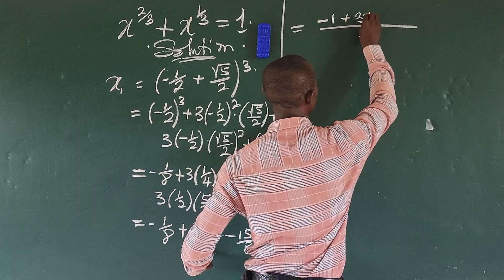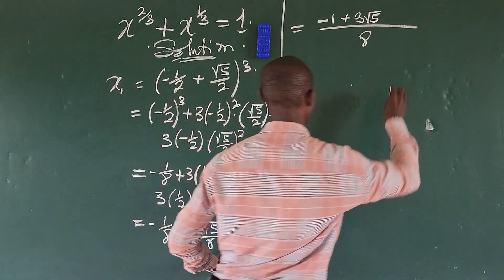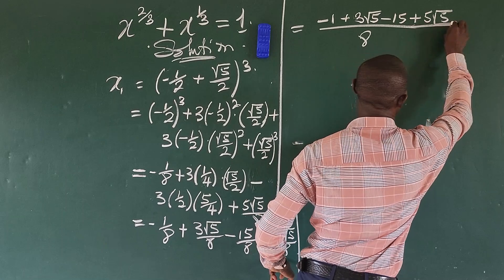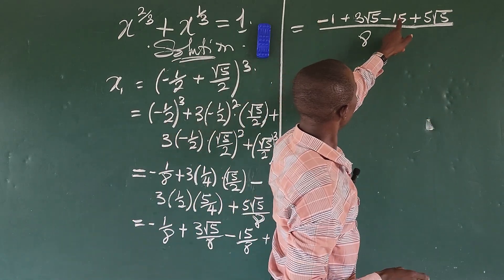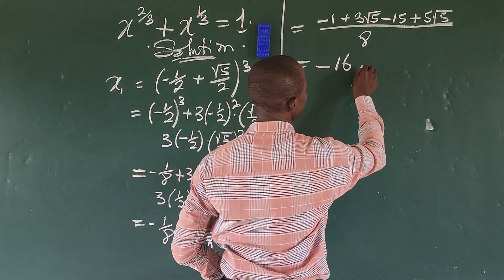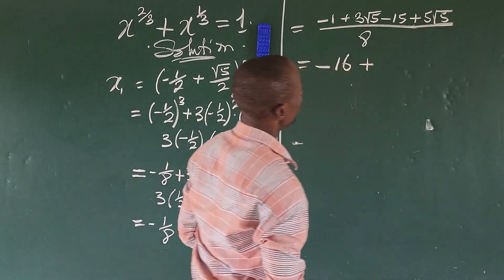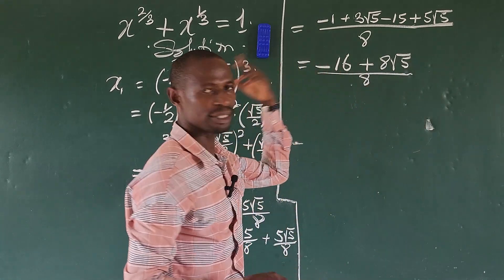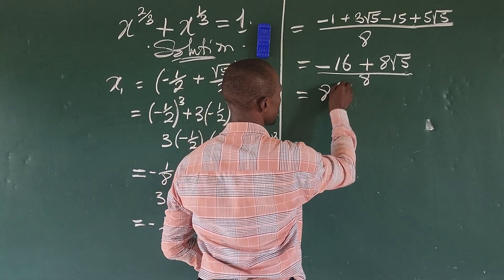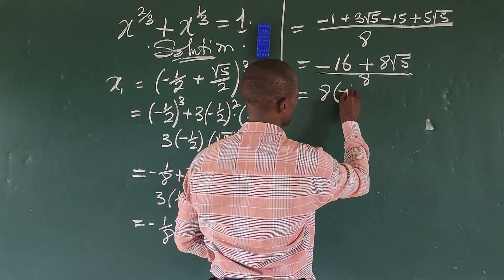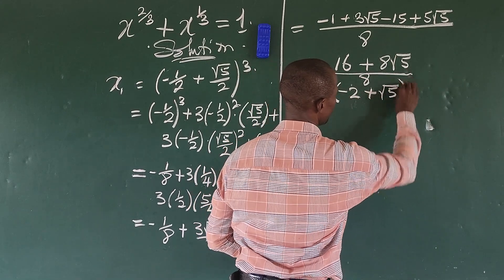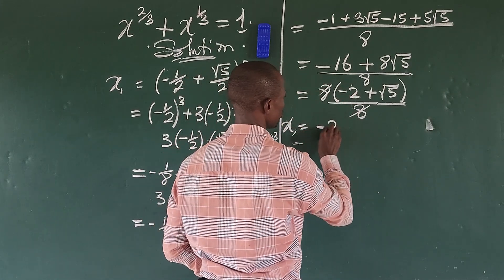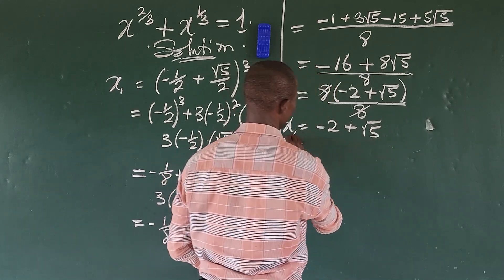Over the common denominator of eight, the numerator is: negative one, plus three root five, minus fifteen, plus five root five. Combining: negative one minus fifteen gives negative sixteen; three root five plus five root five gives eight root five. Factoring out eight gives eight times the quantity negative two plus root five, all over eight. So x1 equals negative two plus root five.